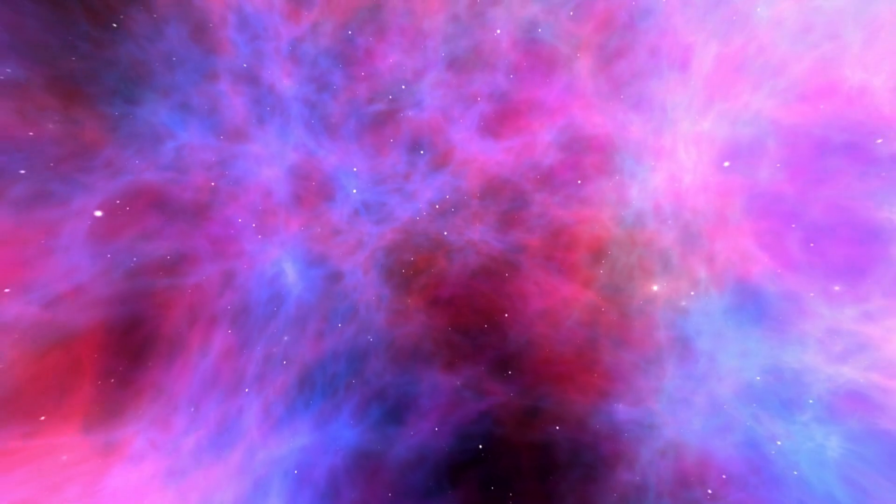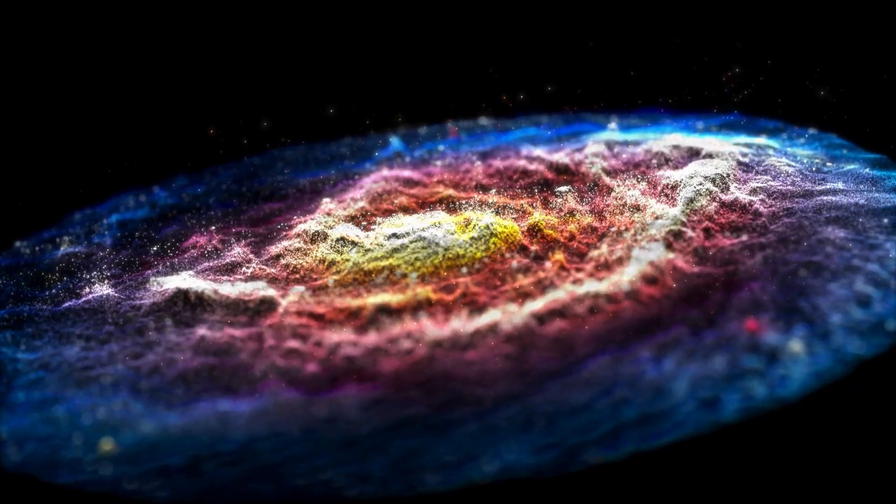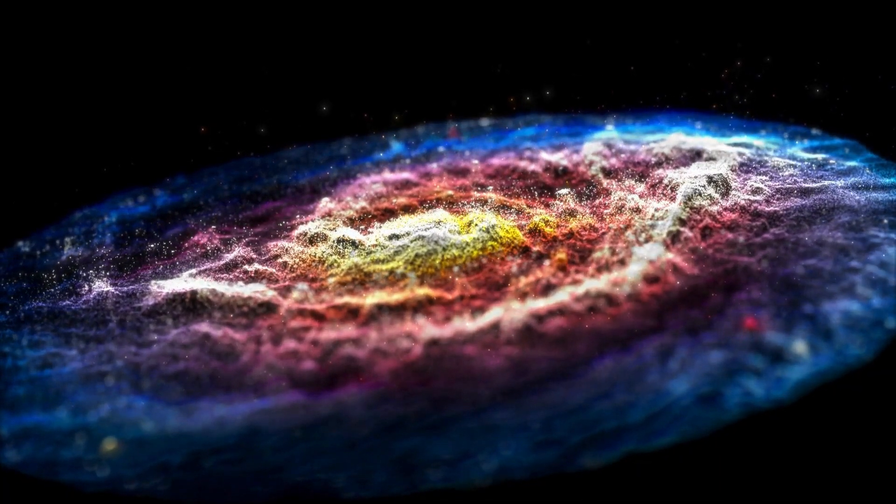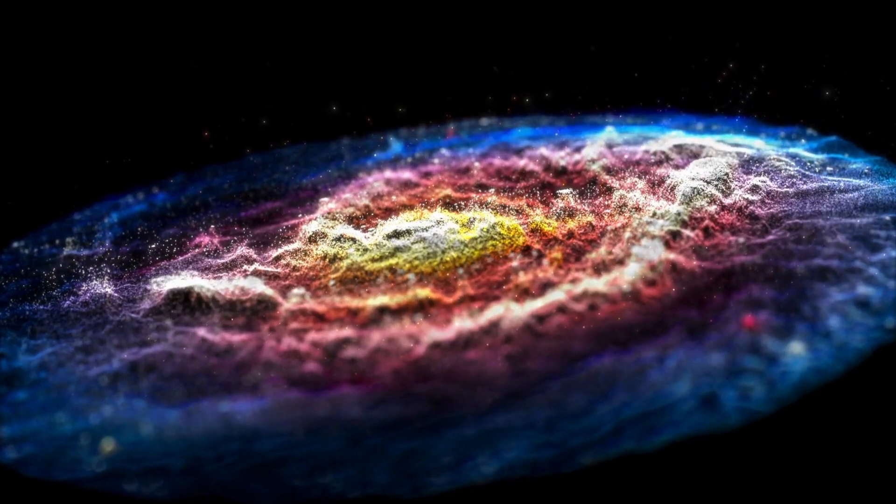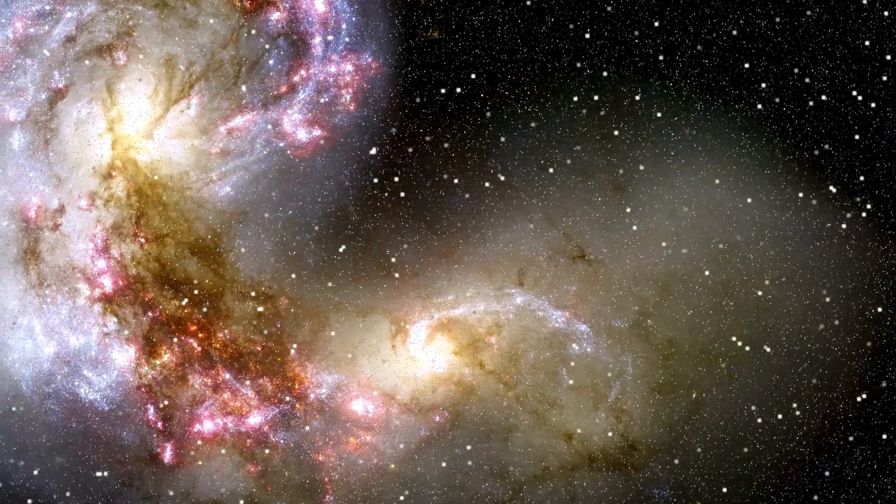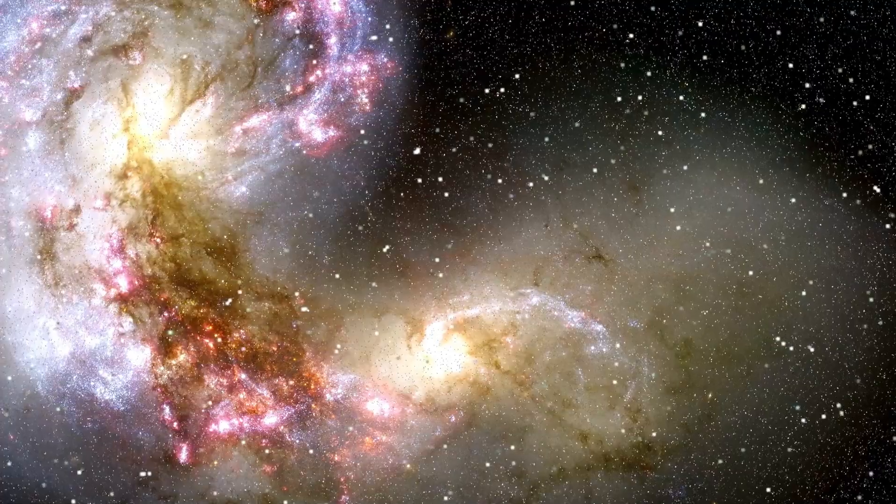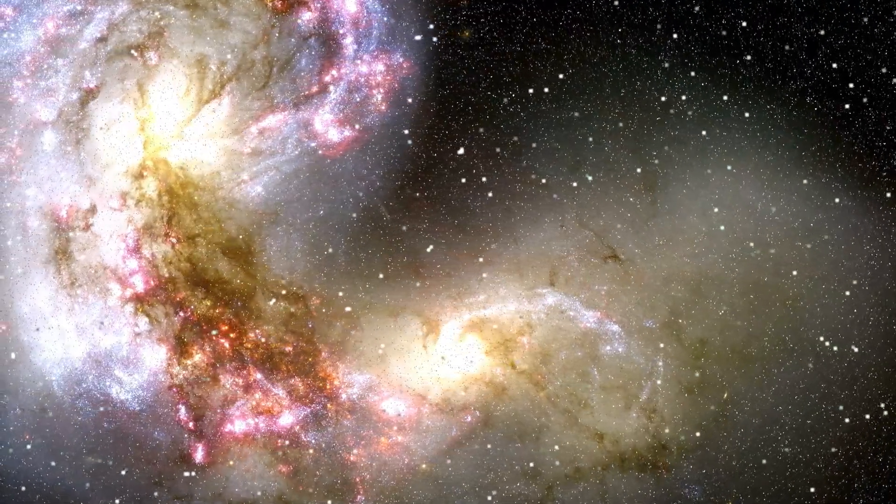The exoplanet, named HIP 65426b, is a colossal gas giant roughly 12 times the size of Jupiter and located 100 times farther from its star than Earth is from the Sun. It's an extraordinary find that showcases the power of Webb's technology.